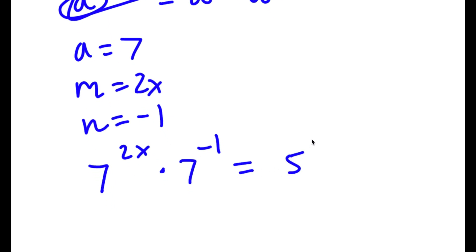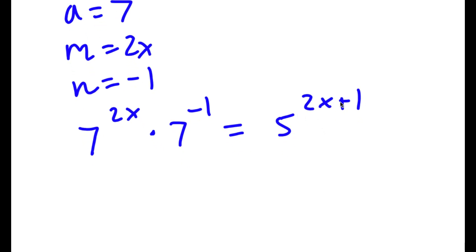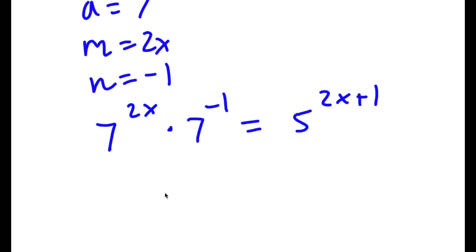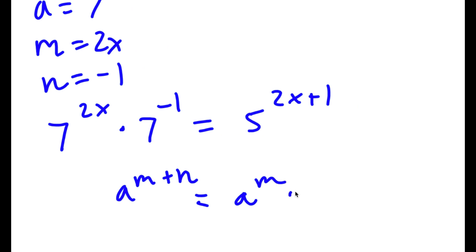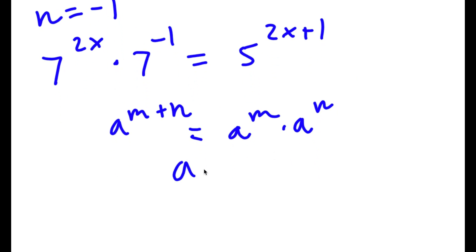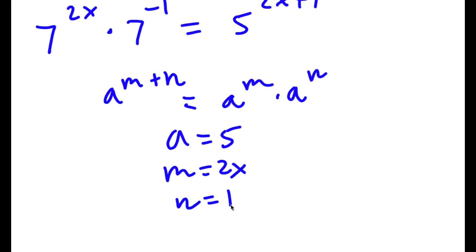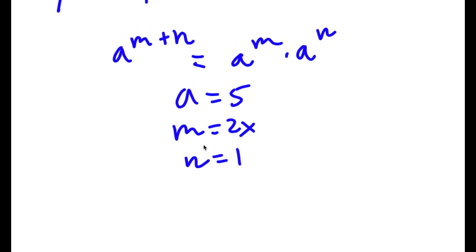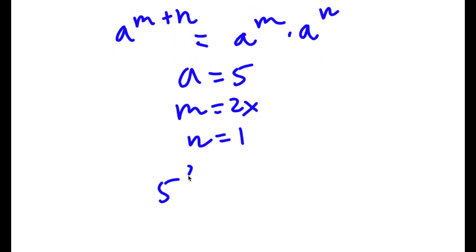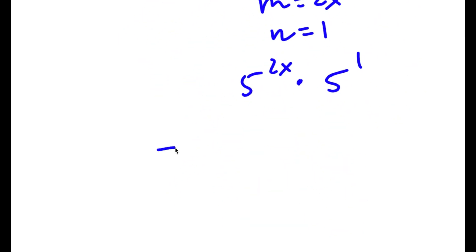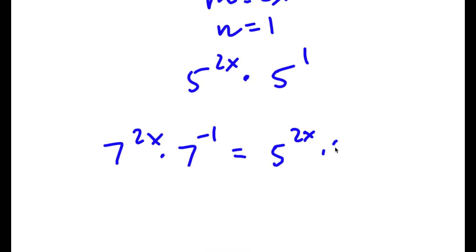Now this is equal to 5 to the power of 2x plus 1, and I'm going to do the same thing with that term. Our property is a to the power of m plus n equals a to the power of m times a to the power of n. So here a equals 5, m equals 2x, and n equals 1. So I have 5 to the power of 2x times 5 to the power of 1. Putting it all together: 7^(2x) times 7^(-1) equals 5^(2x) times 5^1.